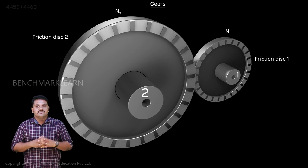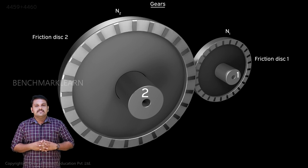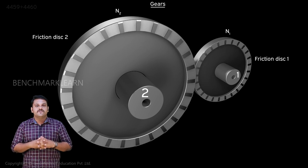These wheels are called friction discs. If we try to transmit more power, there will be slip between the friction discs due to lack of sufficient friction.